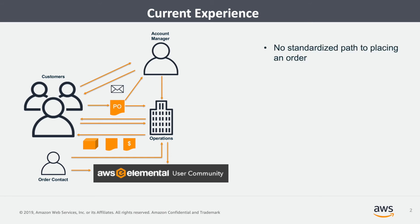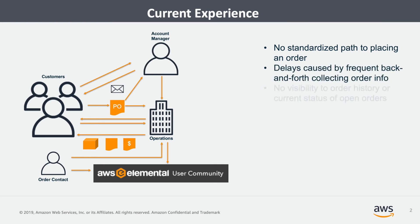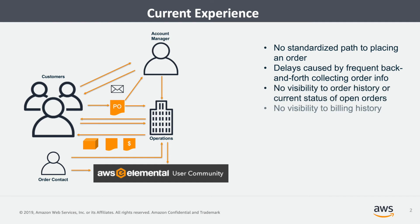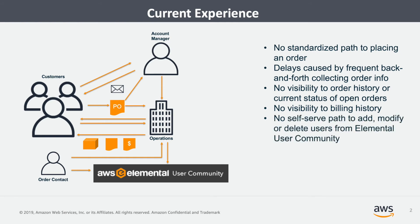This current process can be painful for customers in a number of different ways. To begin, there's no standardized path to placing an order. Customer orders can experience delays because of the frequent back and forth collecting additional order information. Customers have no visibility to order history or current status of open orders, nor do they have any visibility to their billing history. There's no self-serve path to add, modify, or delete users from the Elemental user community, and it's ultimately a bifurcated ordering and account management experience for customers.